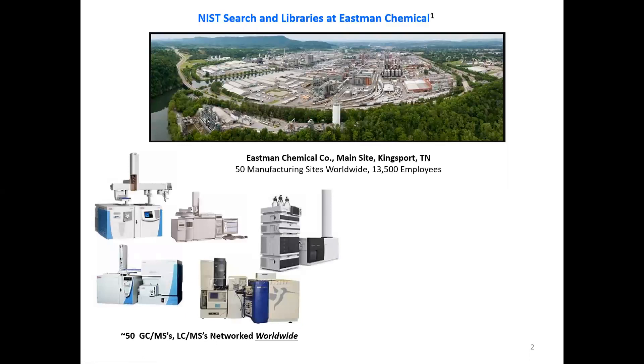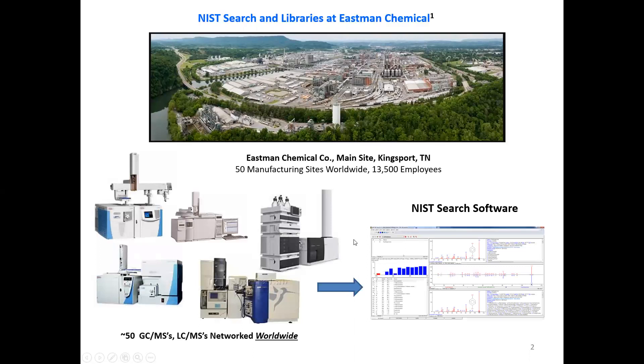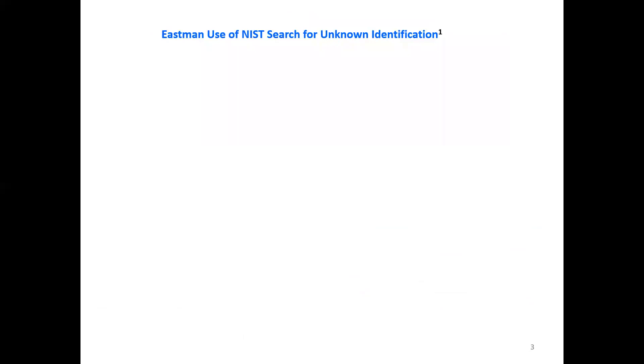A critical part of our operation is the utilization of mass spectrometers. We have over 50 GCMSs and LCMS network worldwide and all of them use the NIST search software for data processing and library searching. We use the NIST search software to incorporate all of the entries that we identify in our operations into a library that we share.